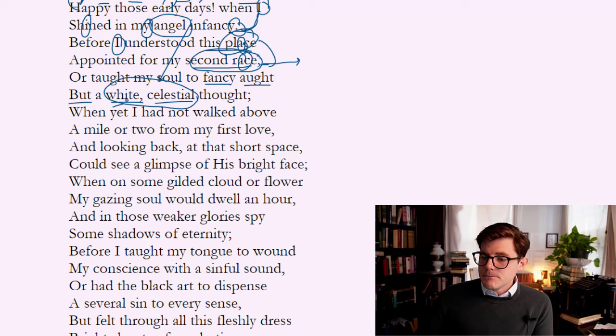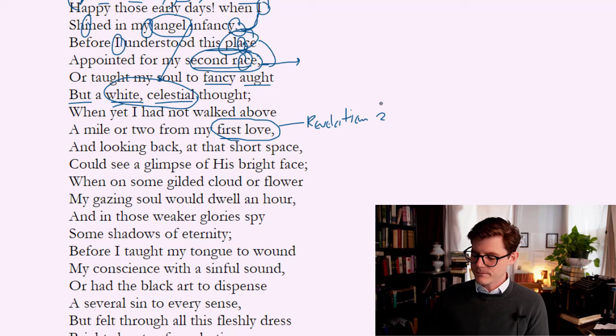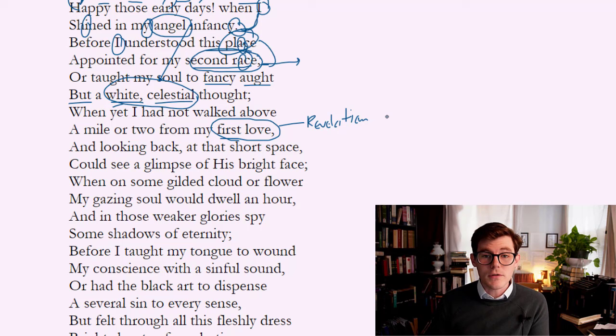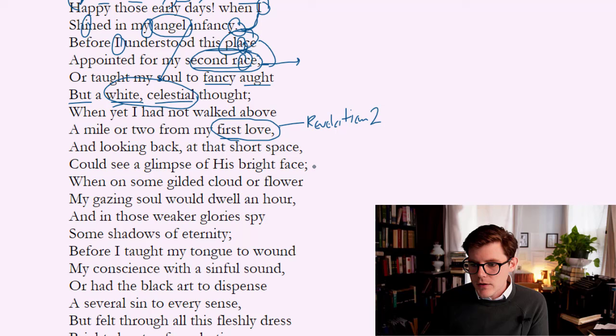'When yet I had not walked above a mile or two from my first love.' There is a biblical reference here from Revelation chapter 2, when John, the author of the Apocalypse, is addressing the church in Ephesus. He says, 'You've done well, but you have lost your first love' — your love for God has grown cold. So it's interesting that Vaughn is taking that language from Revelation 2, placing it here to describe his first state, when he was all-soul — white, celestial, angelic, with God — and looking back at that short space, could see a glimpse of his bright face.